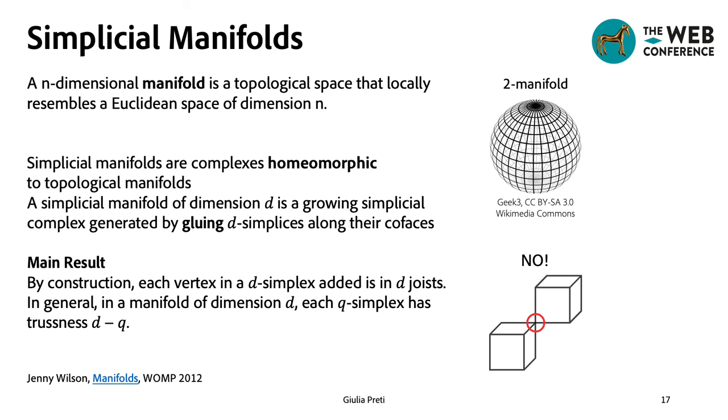The geometrical interpretation of simplicial trussness is given in terms of manifolds. Manifolds are an important class of topological spaces, with various applications in mathematics, but also in network analysis, as it has been shown that the geometry of a network affects its dynamics.